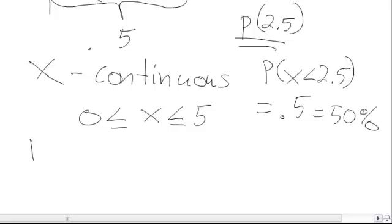What if we ask the question, what's the probability that x is less than or equal to 2.5? Do you see how that's still the exact same thing? It's also 0.5.